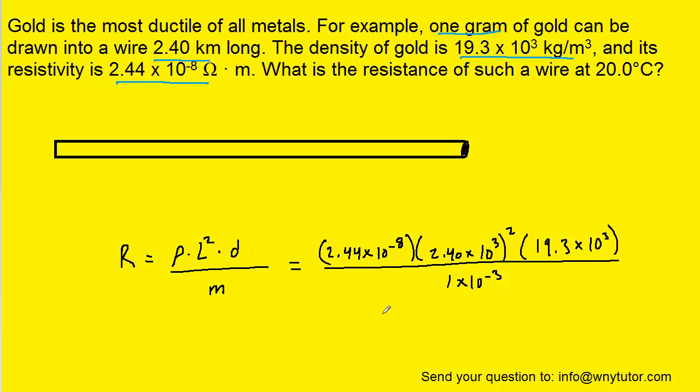And when we plug that in and simplify, we get the following rather large value for the resistance. And if the question wants you to put it into mega-ohms, which sometimes it would if it's such a large value, we just have to recall that 1 mega-ohm is equal to 10 to the power of 6 ohms. And so if we perform that conversion, we should get roughly 2.71 mega-ohms as the final answer.